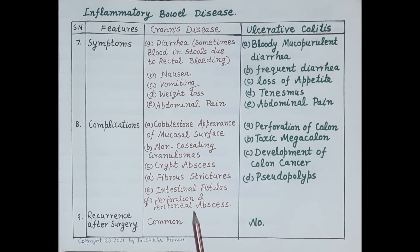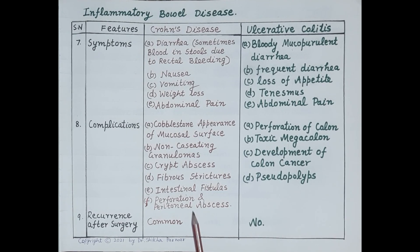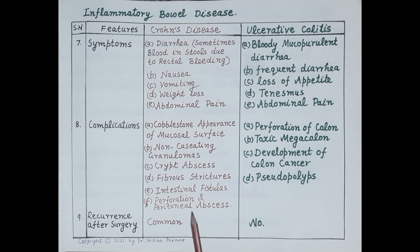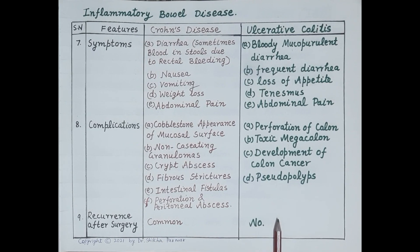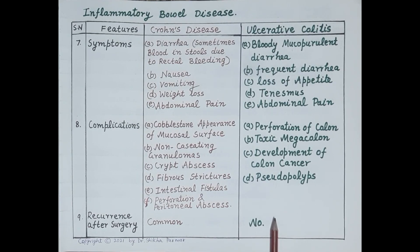Regarding recurrence after surgery: recurrence of Crohn's disease after surgery is common because the inflammation can involve any part of the GIT from mouth to anus — it is not confined to one segment that can be removed to prevent recurrence. Ulcerative colitis, however, does not recur after surgery because it is confined to the rectum and colon; once the affected area is surgically removed, it does not recur.